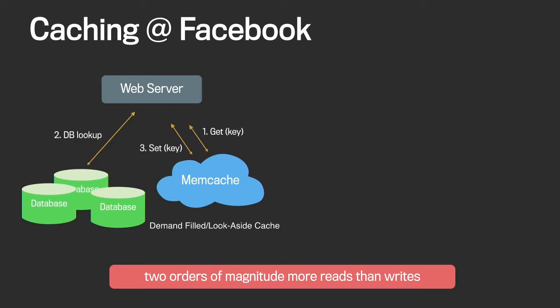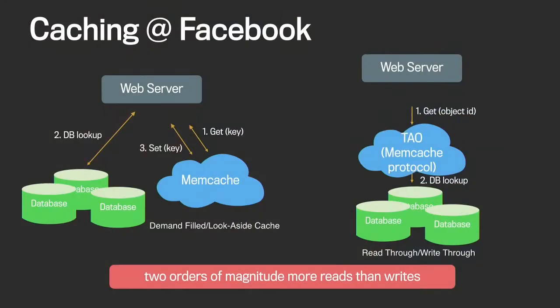In this model, first we try to fetch data from the cache. If it's present there, then we're done. If not, then we go and do the database lookup. And finally we set the key to memcache for later.